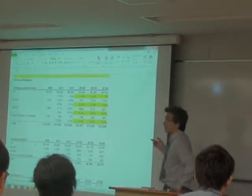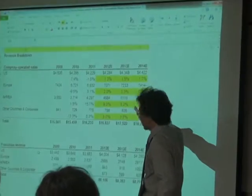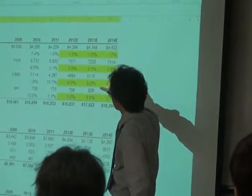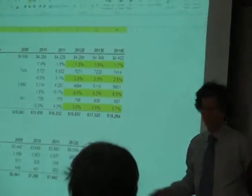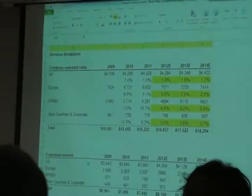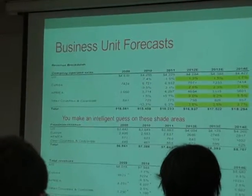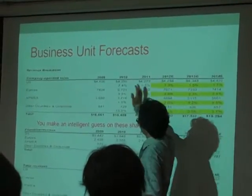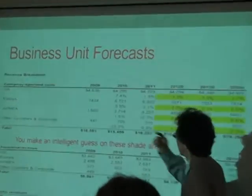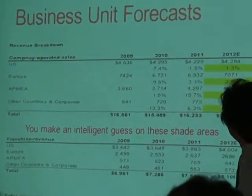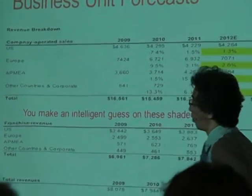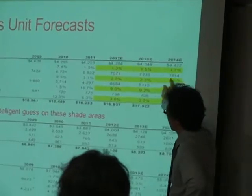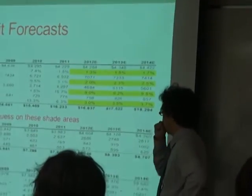I already uploaded these files, and this is the example. Some of the data you can use, some of it you cannot, but this is an example. This is from an attached Excel sheet, so you can take a look later. Assume that this is historical data — US, Europe, ACMEA, and other countries — and this is company-owned store sales. The shaded areas are what you put under your forecast model.